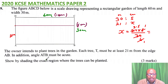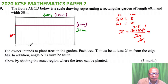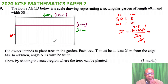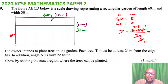For the second condition, angle ATB must be acute. To solve that, you draw a semicircle taking AB as the diameter. We know that an angle subtended at the circumference by the diameter is 90 degrees. So we need to bisect AB to find the center.